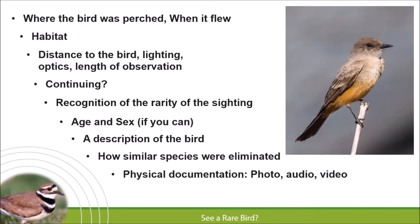For describing a rare bird, cover: where the bird was perched or how it was flying, the habitat where you saw it, your distance to the bird, whether it's a continuing bird that's been seen before, acknowledging the rarity of the sighting, age and sex if identifiable, a physical description of the bird, and how you eliminated similar species. The most important thing is to be as detailed as possible. I'll show you my checklist for a Say's Phoebe I recently saw in the Twin Cities as an example.